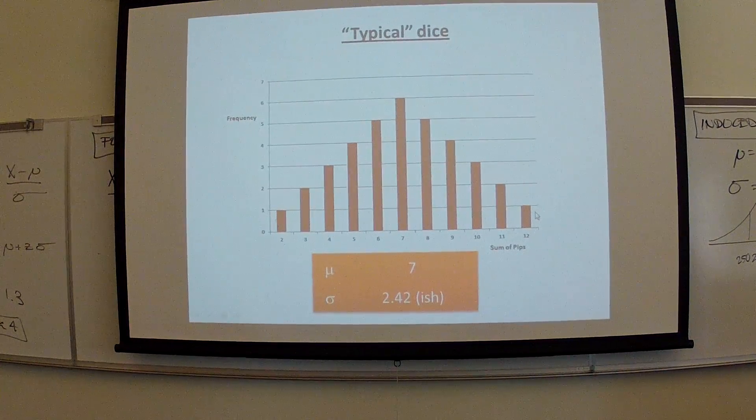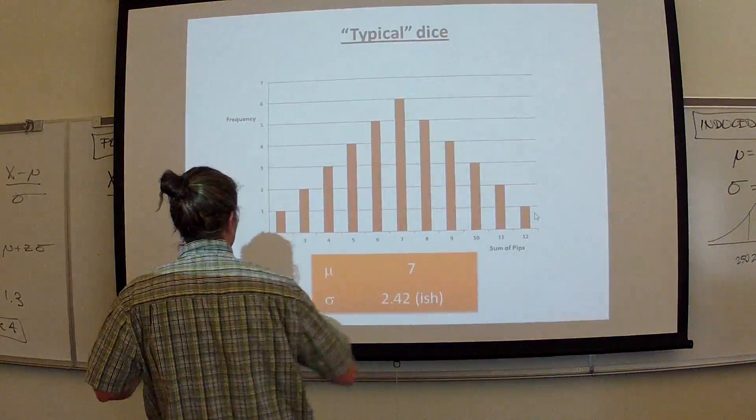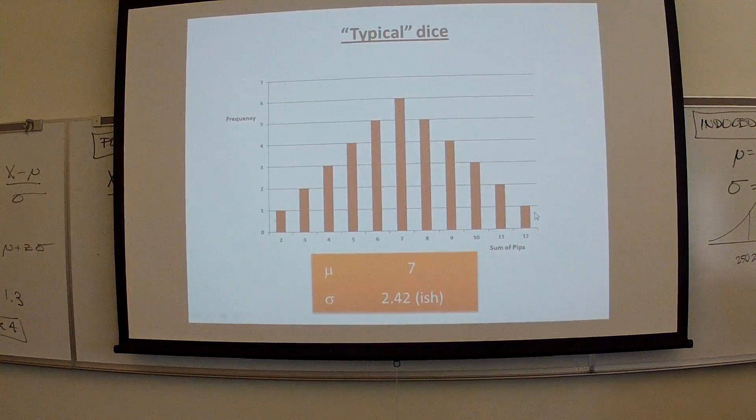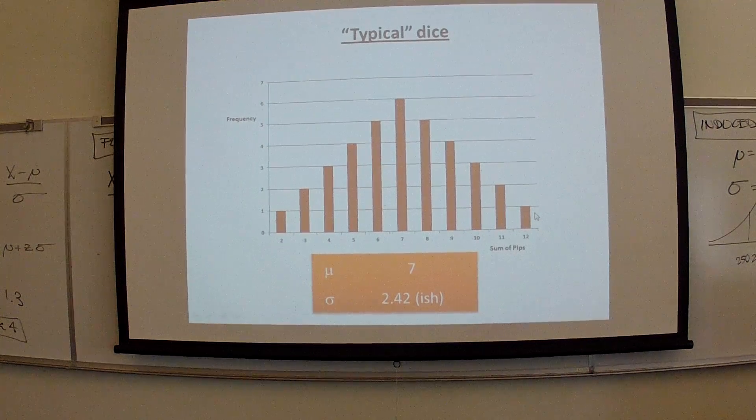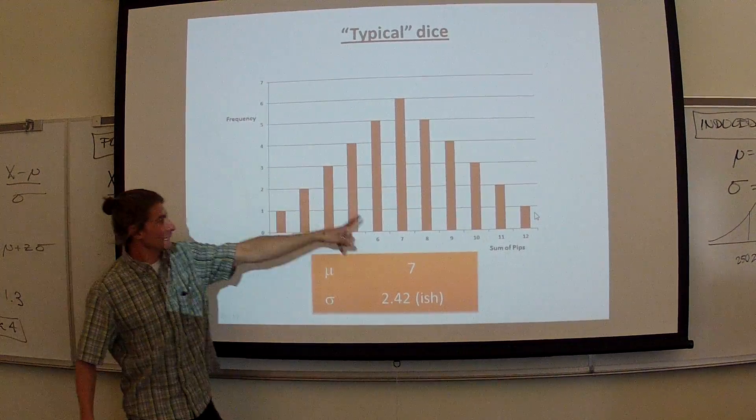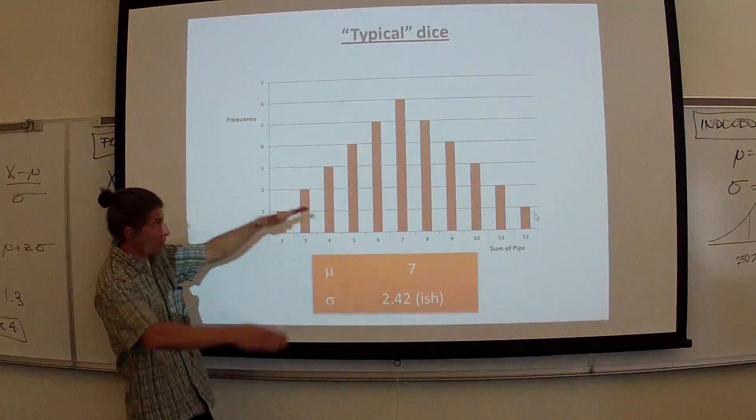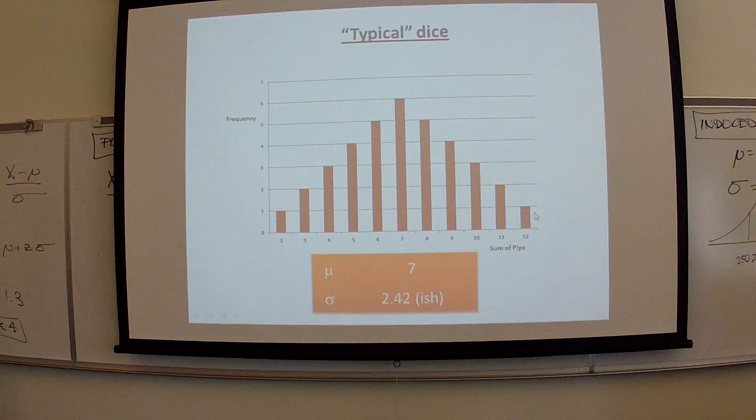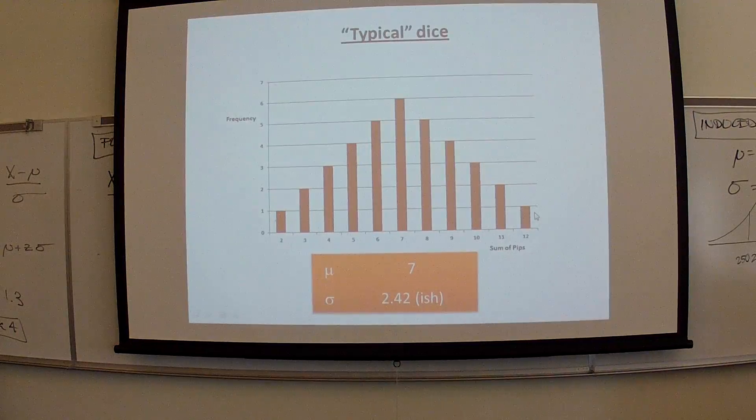So this is what a normal, typical set of dice, unscewed and unmasterized, would look like as far as the distribution goes. There are six ways to get a seven, which is the average. It's perfectly symmetrical, not bell-shaped, but perfectly symmetrical. It actually makes a 90-degree angle at the top. None of you had this.